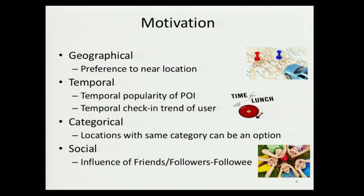For the motivation, let's look at the first factor: the geographical factor. It's intuitive that users always prefer nearby locations compared to locations that are far. Similarly, the temporal popularity of a location has a significant impact — for example, it doesn't make sense to recommend a bar in the afternoon; it makes more sense to recommend it in the evening or at night. Users also have a tendency to visit certain locations at certain times of day. The location category and the social influence within a user's network also play a significant role in recommendation.